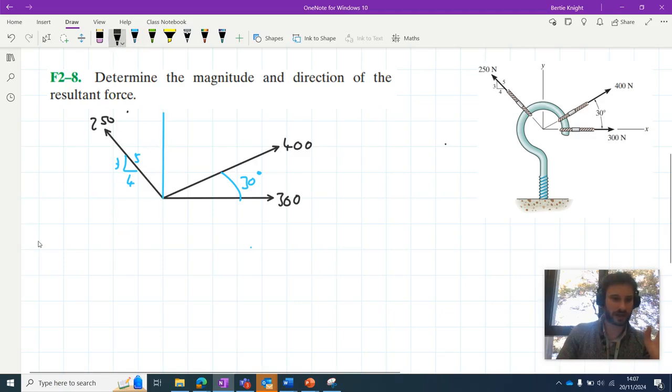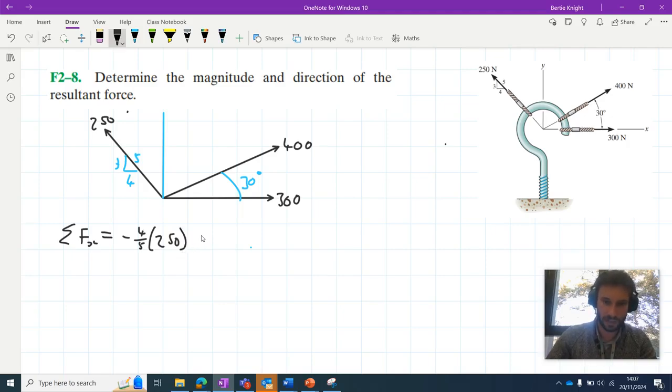So we have our free body diagram here. Let's go ahead and resolve horizontally. So we could say the sum of the X components here is equal to minus four-fifths of 250. I know that's minus 200, but whatever. Then we've got the horizontal component of this 400 Newton force. We could say 400 cos 30. And we've got this 300 Newton force.